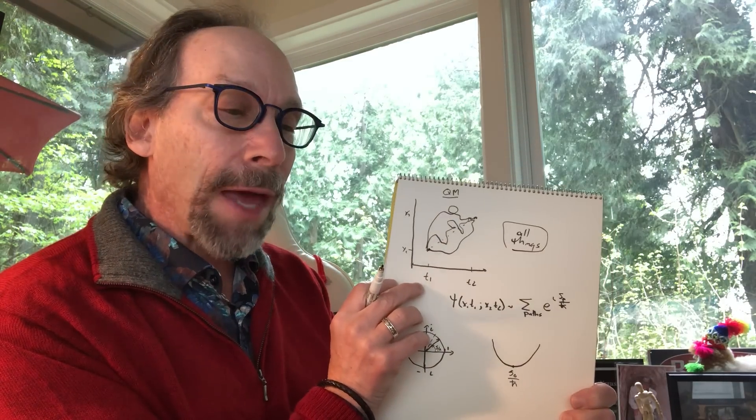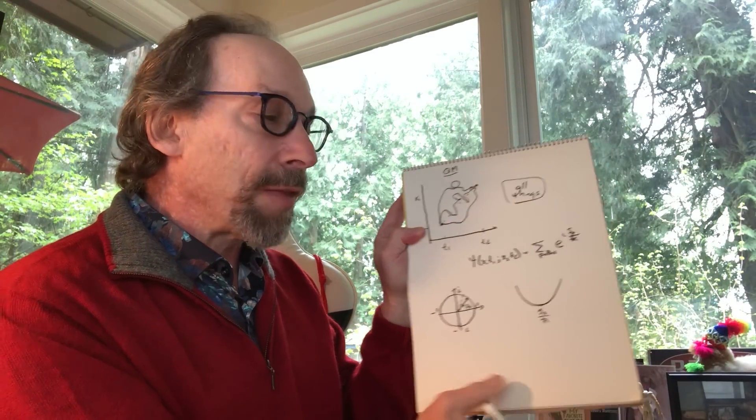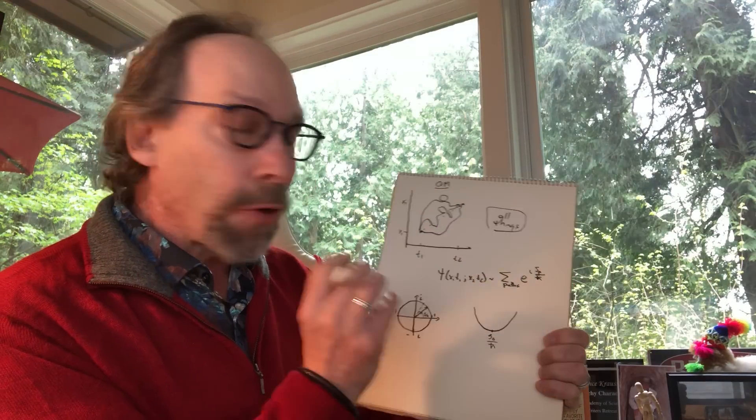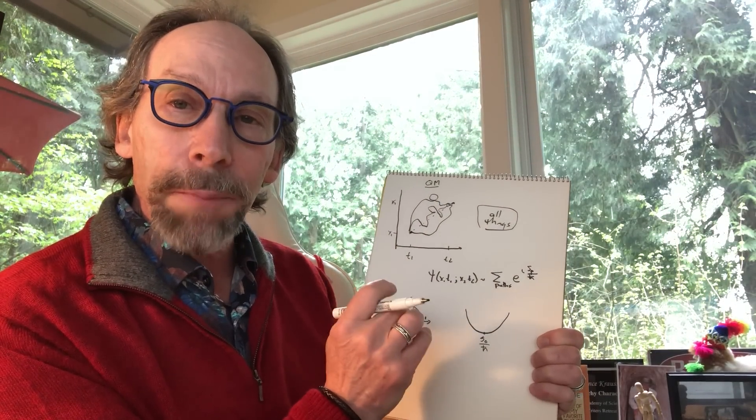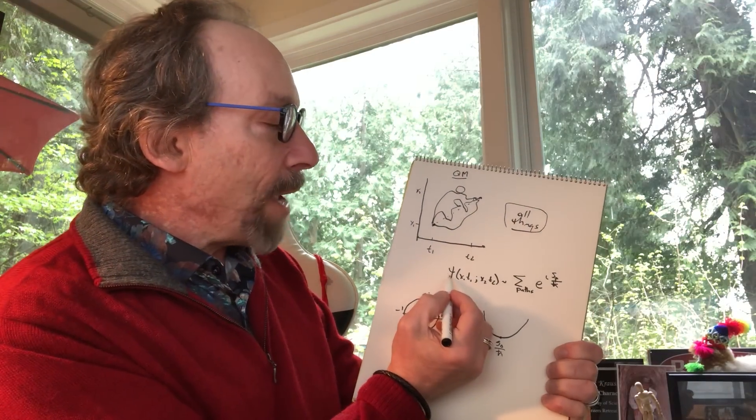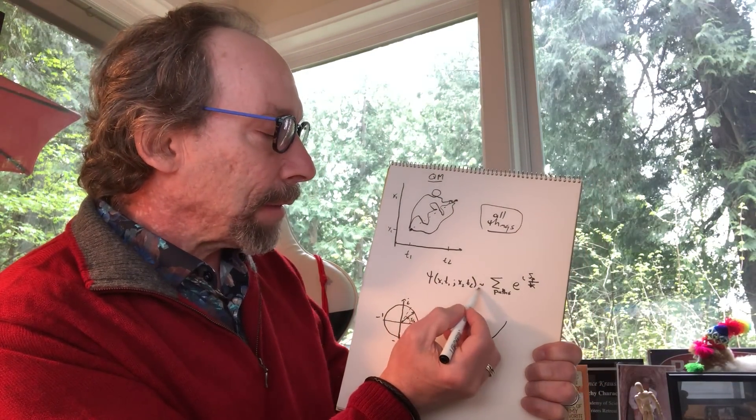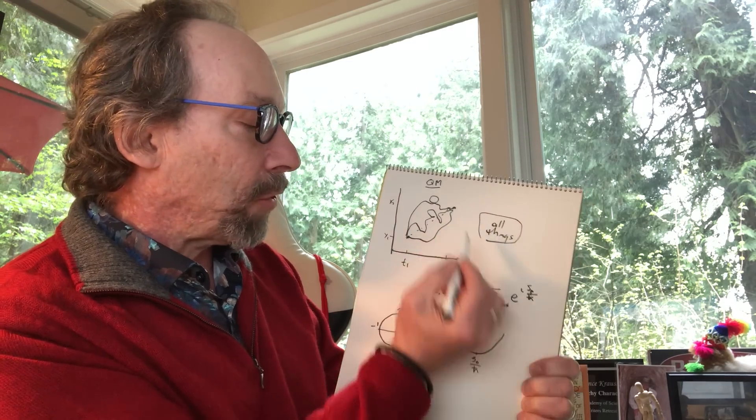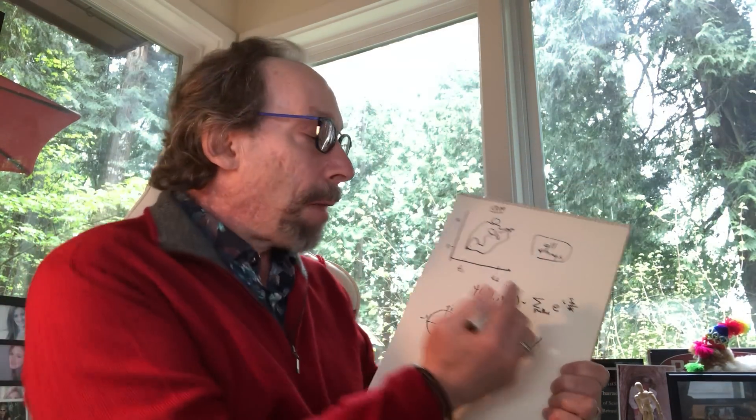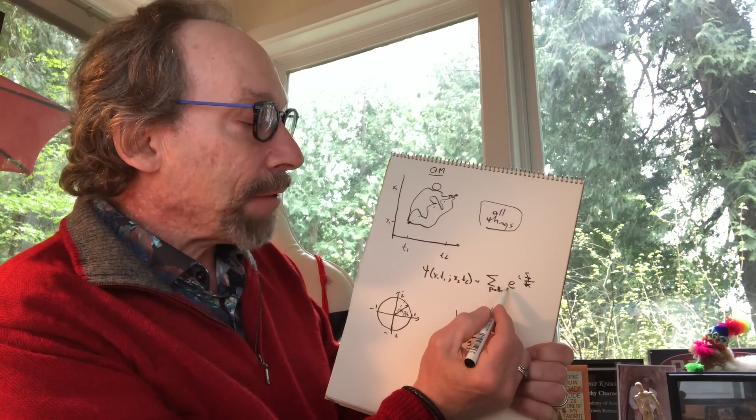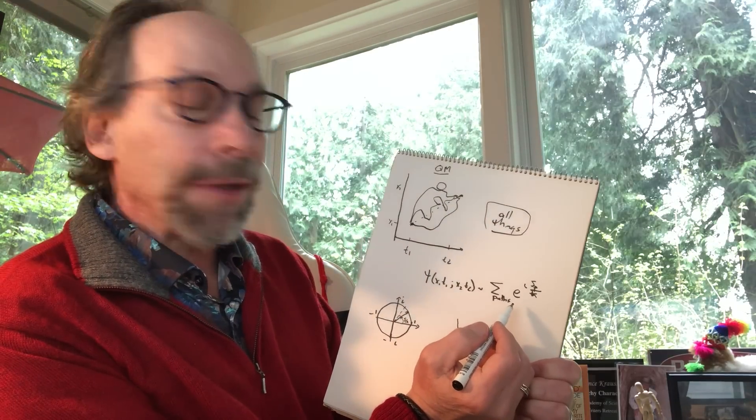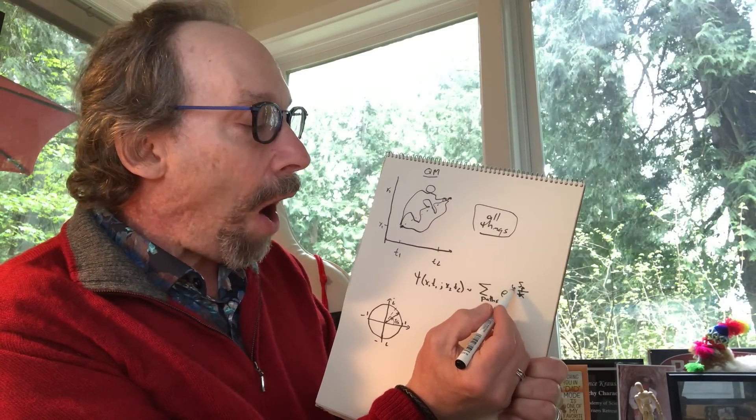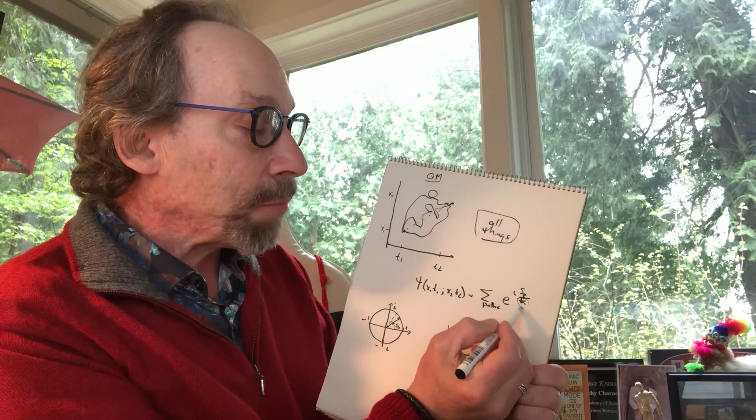That's the weird thing about quantum mechanics. This was a formulation originally developed by Dirac and then refined by Feynman, although the argument I'm going to give you was first developed by Dirac. It says the wave function, which is basically the likelihood that a particle will start out at x1 at t1 and end up at x2 at t2, is given by summing over all paths some probability. It's called the probability amplitude but it's now not e to the minus action, it's e to the i action over h-bar where h-bar is Planck's constant.